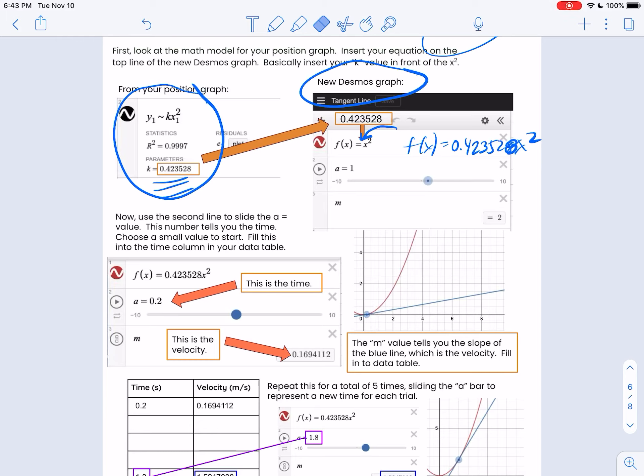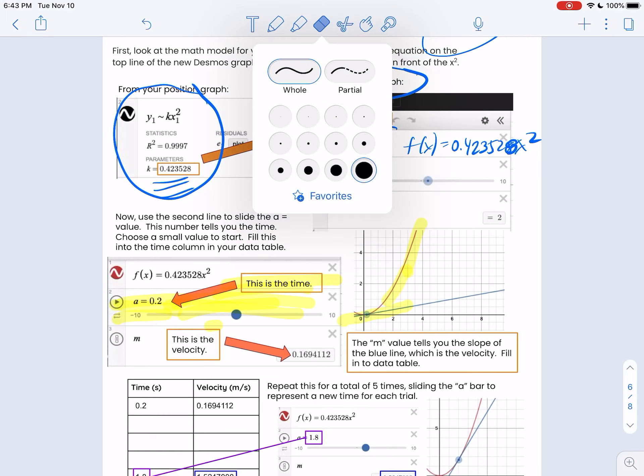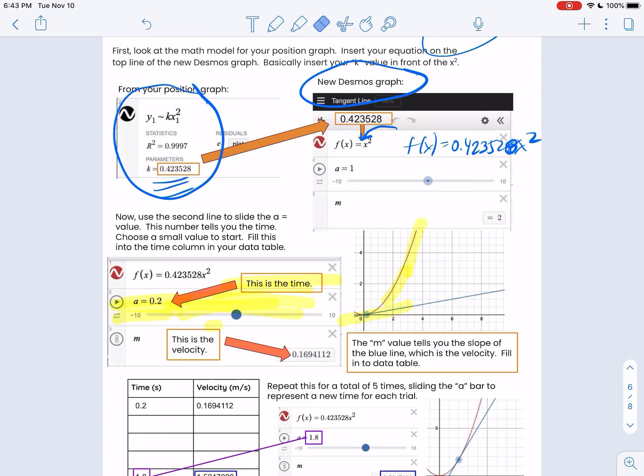Then when you do that, the nice person that made this little simulation, when you slide this slider, that moves the line to a different place. So what that's doing is telling us the time. Because as you slide this here, then you're going to slide it to here and it's going to make a line. You're going to slide it to here and make a line. So this a value is telling you the time. That's going to go right there.